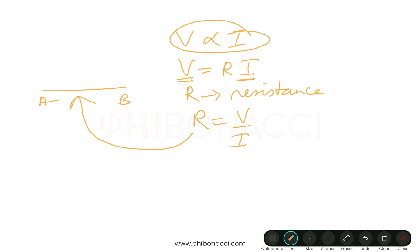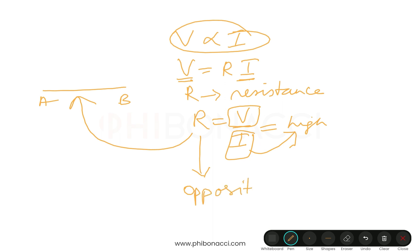R is the resistance, and it is simply the ratio of potential difference to current. If this ratio is high, it means the potential difference is high but current is small, so resistance is high. Resistance tells us how much opposition is offered to the flow of current. If more opposition is offered, R will be high and current will be less; if resistance is low, more current will flow.